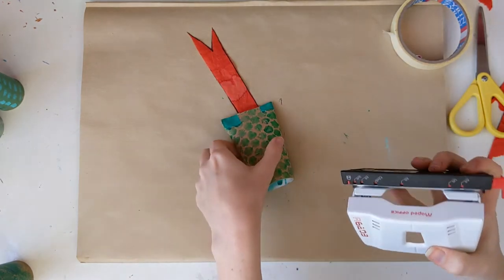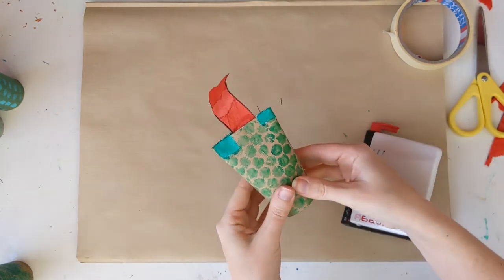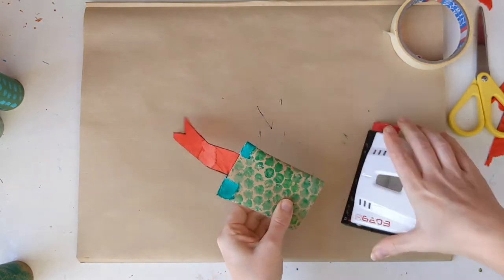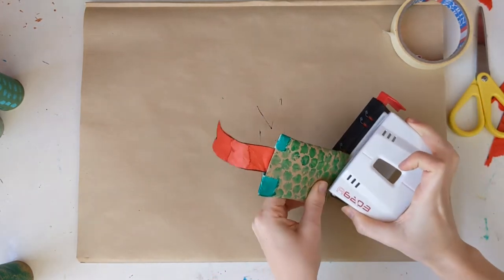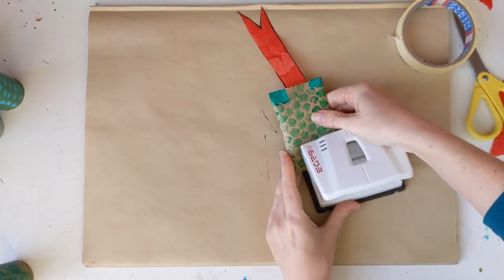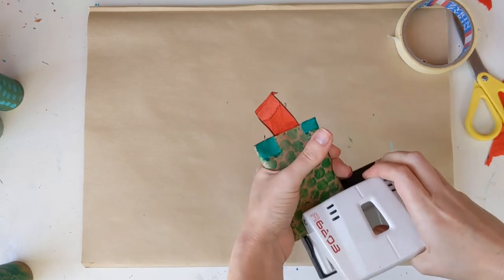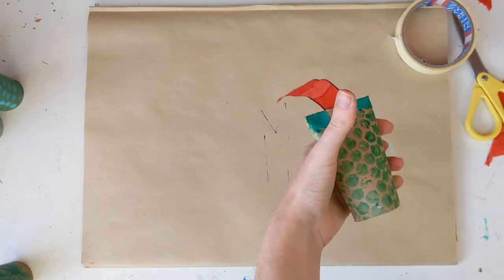Next I'm going to take a hole punch and punch a hole in the bottom of the head. I need to flatten down the cardboard so I can fit it in. If you don't have a hole punch you could probably ask an adult to do this for you with some scissors or a pencil. There we go. This is so we can tie our string later.